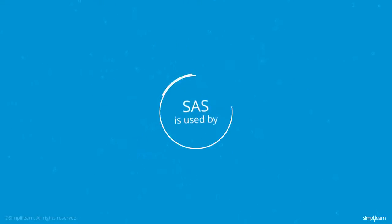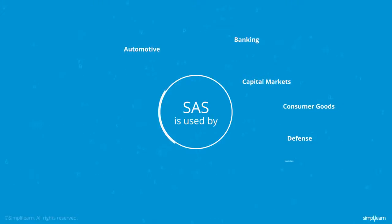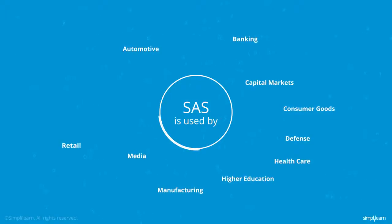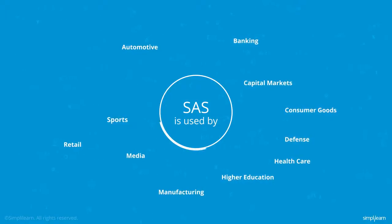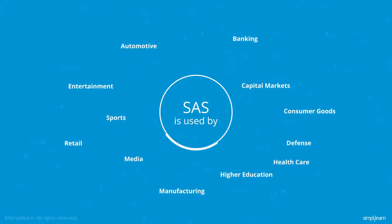Industries that use SAS include automotive, banking, capital markets, consumer goods, defense, healthcare, higher education, manufacturing, media, retail, sports, entertainment and so on.